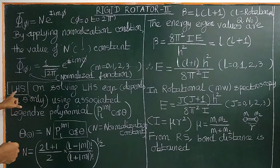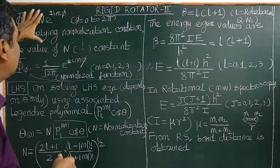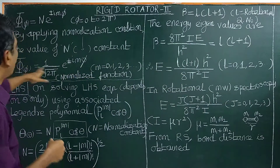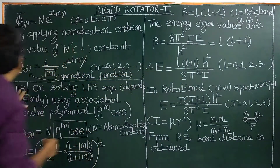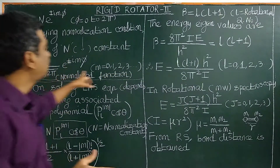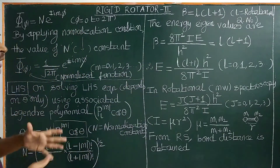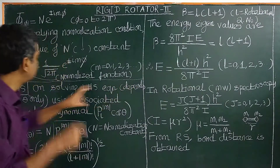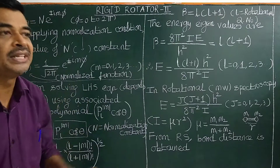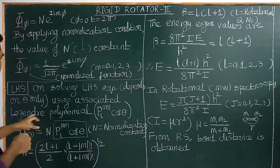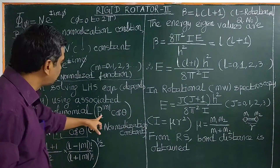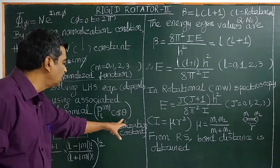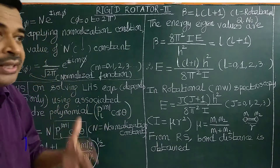Now on solving the left-hand side equation, which depends only on theta, using the associated Legendre polynomial — that is P sub L, modulus of M, of cos theta — we solve for the theta function.